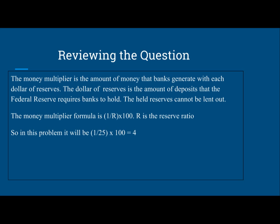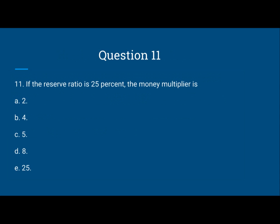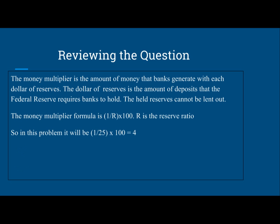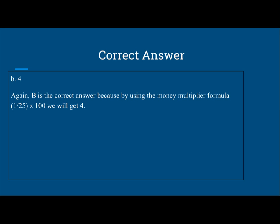The money multiplier formula is 1 divided by R times 100. R is the reserve ratio. So in this problem, it will be 1 divided by 25 times 100. The 25 is the reserve ratio that the Federal Reserve has enacted upon all the banks. So 1 divided by 25 times 100 equals 4. So the correct answer is 4.